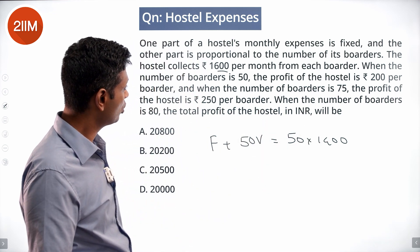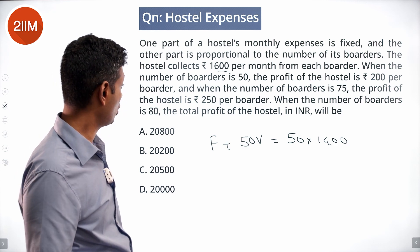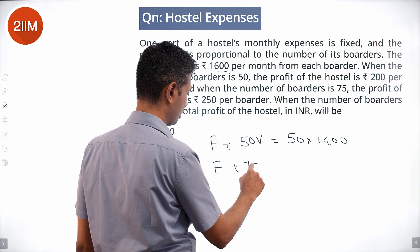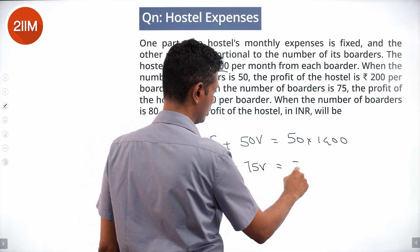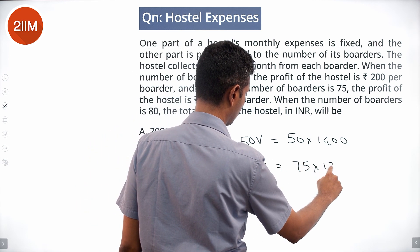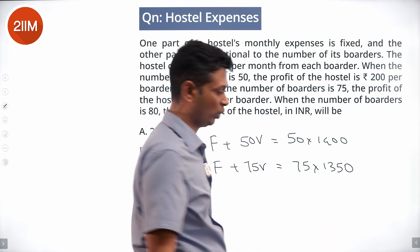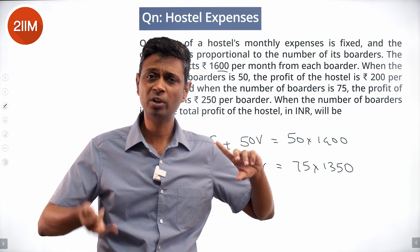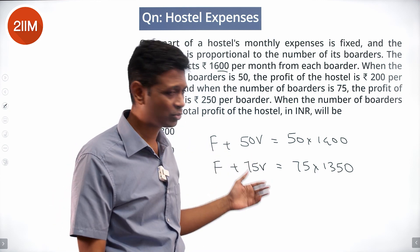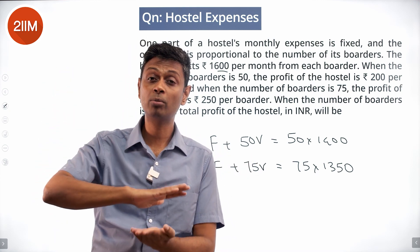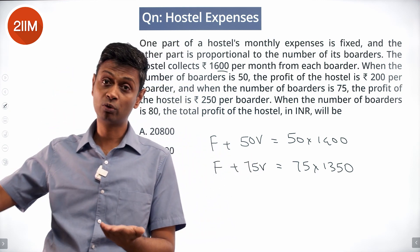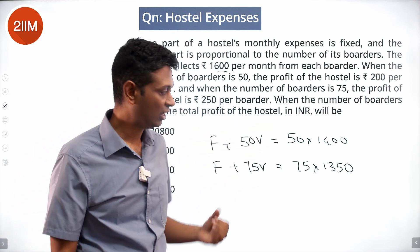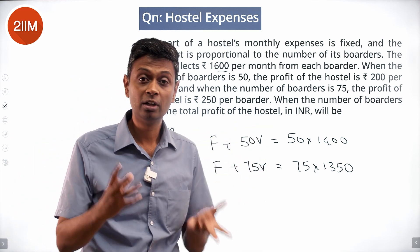When the number of boarders is 75, the profit of the hostel is Rs. 250 per boarder, so F plus 75V equals 75 times 1350. Why 1350? That's 1600 minus 250. They make more profit per boarder because the fixed cost is now distributed among a larger number of people — instead of F being spread over 50, it's spread over 75.